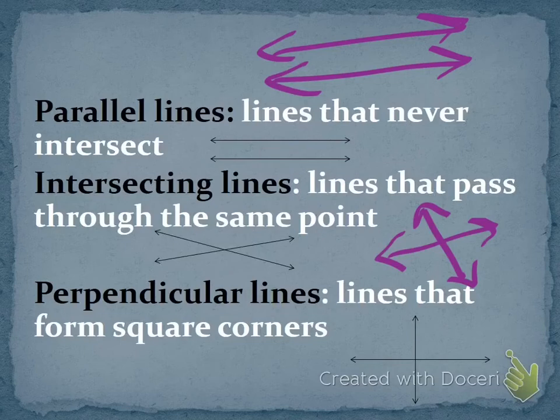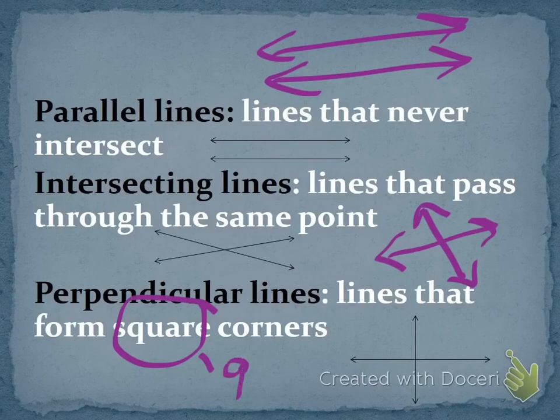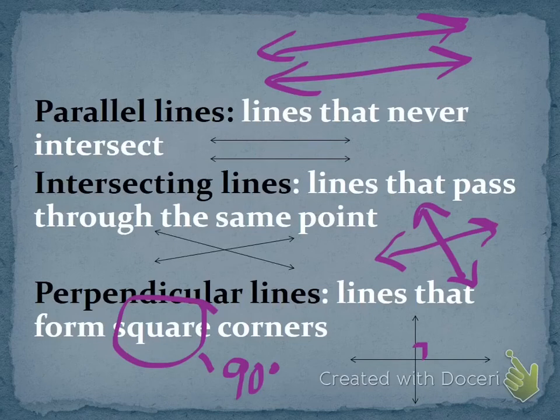Perpendicular lines are lines that form square corners. When we refer to square corners, we are referring to what we call 90 degrees, and that is what you see right here. You will often see that identified with a little box on the inside just like I drew right here. That is what we refer to as a square corner.